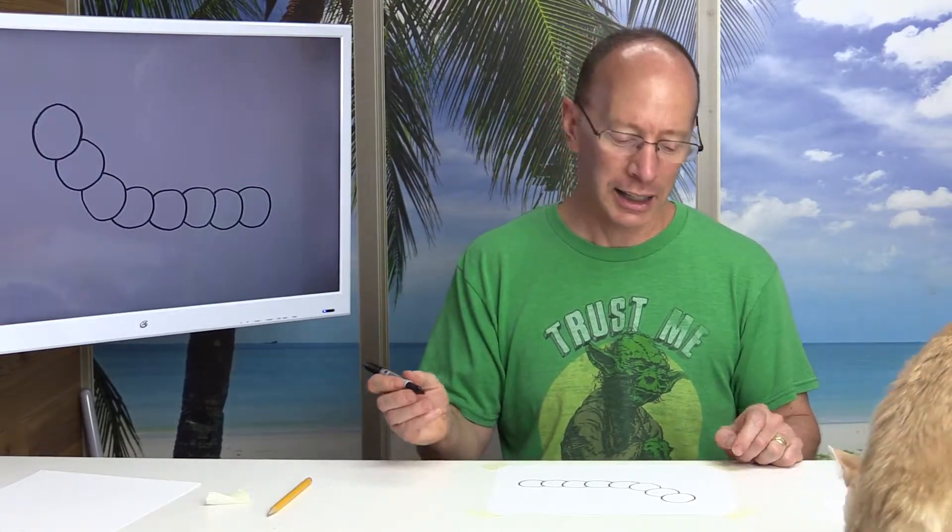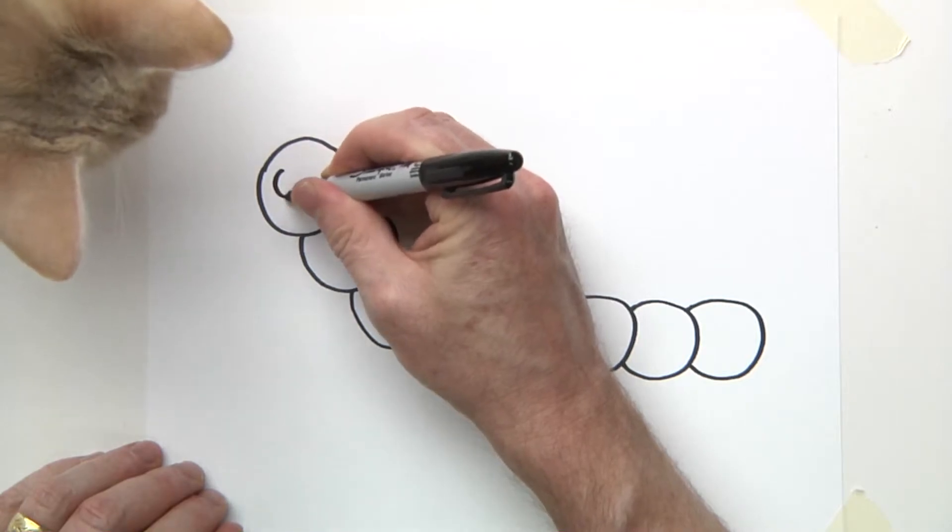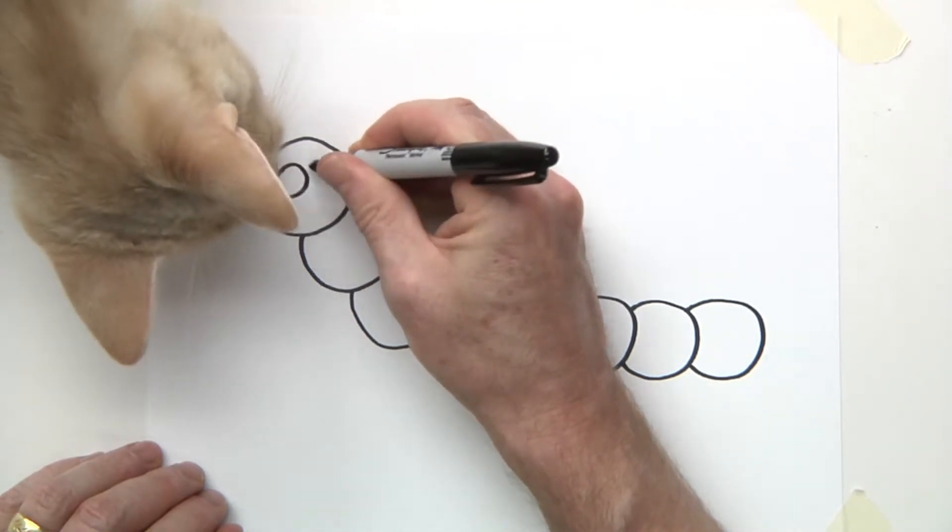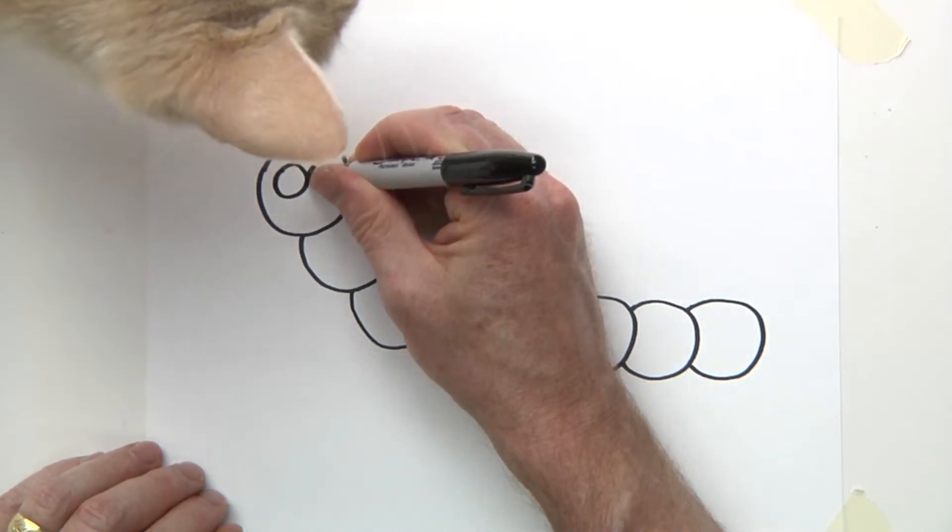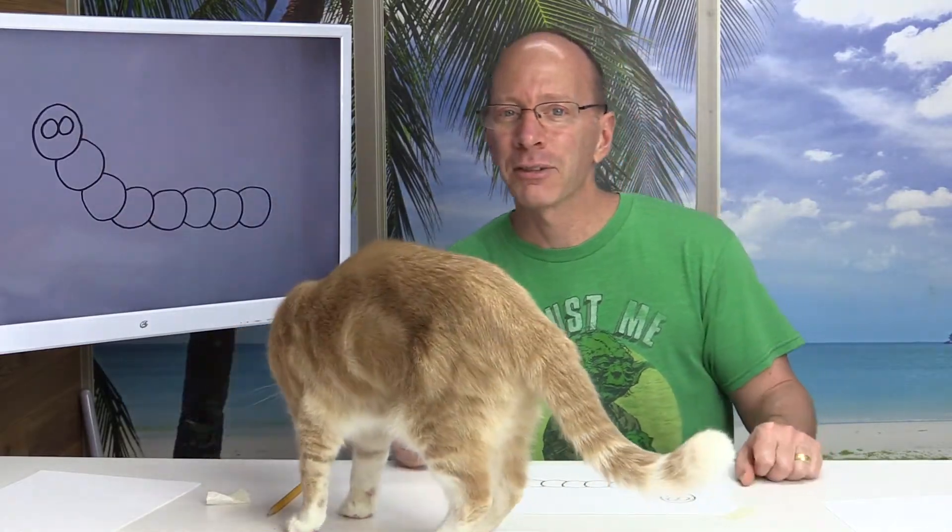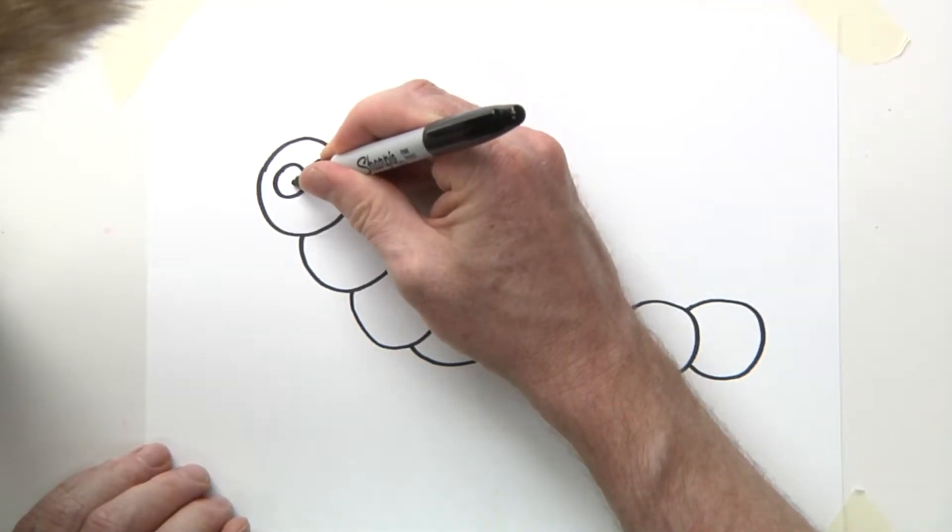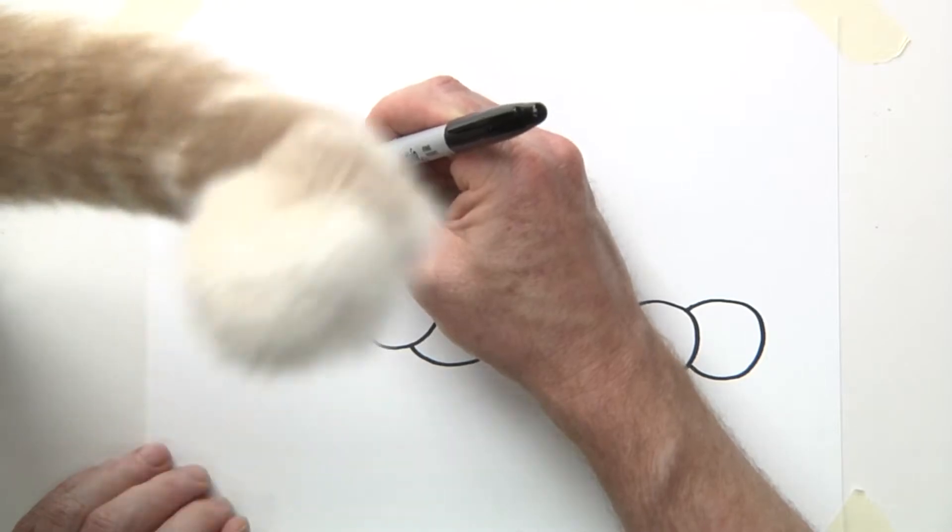Now we're going to draw some eyes. So I'm going to do two big circles right here. The cat is always interested in learning what I'm drawing. I wonder if someday the cat will start drawing. And I'm going to put pupils right here on the eyes.